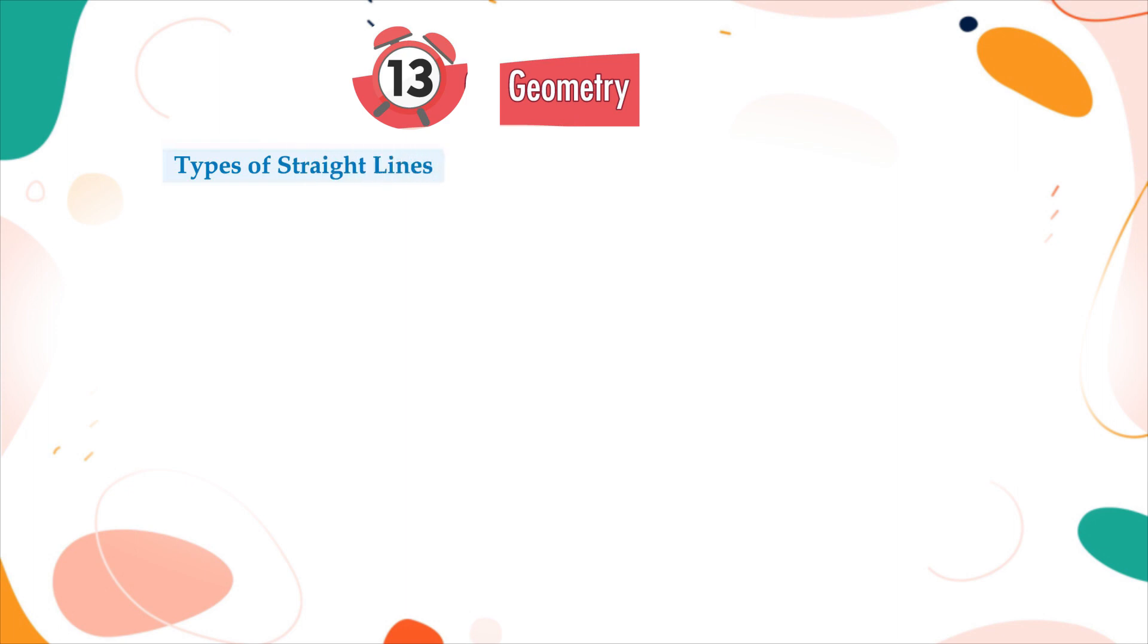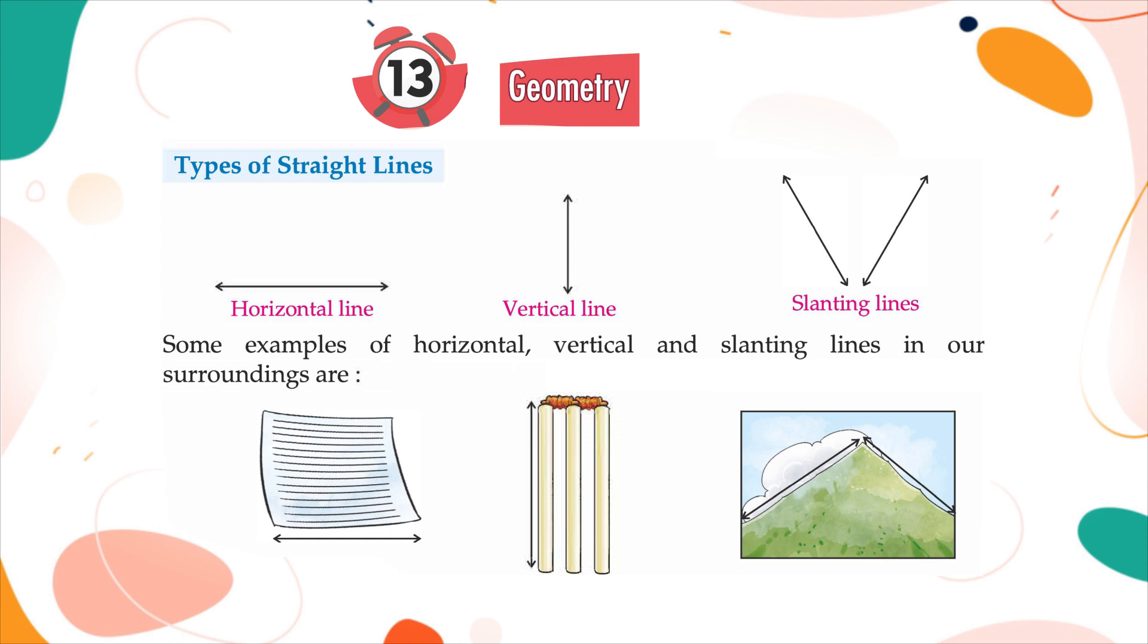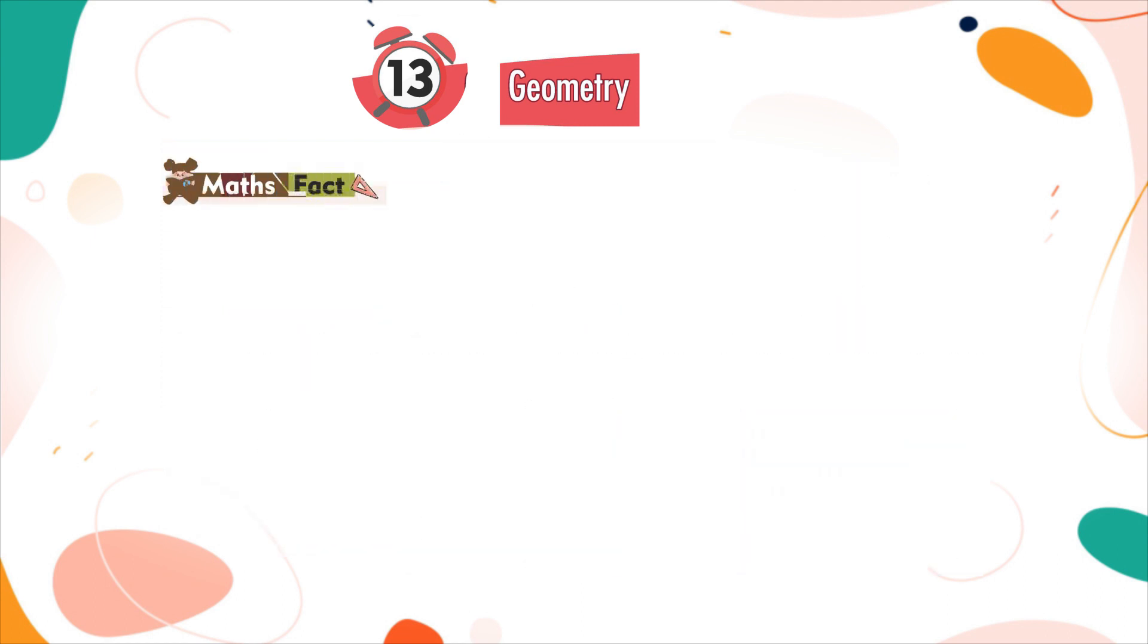Types of Straight Lines: Horizontal Line, Vertical Line, Slanting Lines. Some examples of horizontal, vertical and slanting lines in our surroundings are... Math Fact: Horizontal lines are also called sleeping lines and vertical lines are also called standing lines.